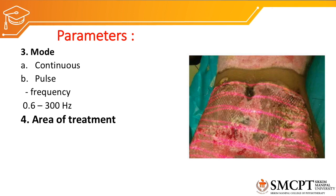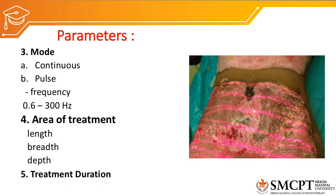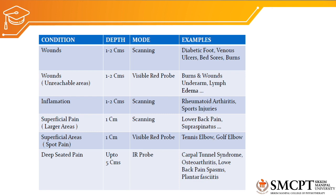The next parameter is the area of treatment — the length, breadth, and depth of the wound or tissue that requires laser therapy. These dimensions are entered by the therapist, and after all parameters are selected and entered, the machine will automatically calculate the treatment duration.